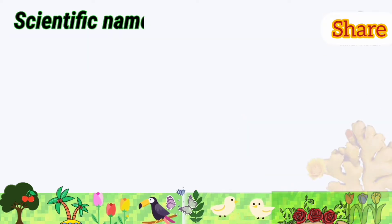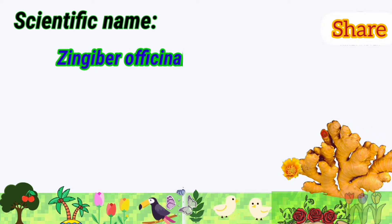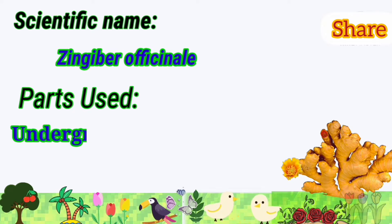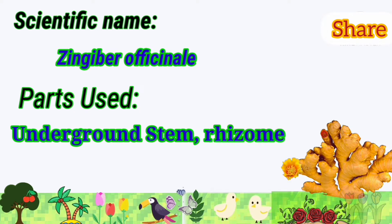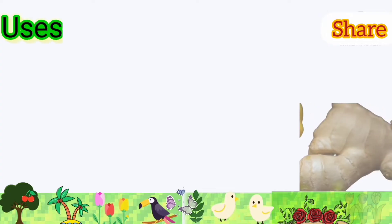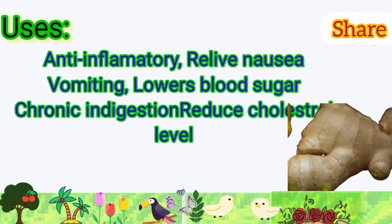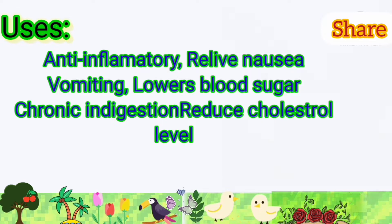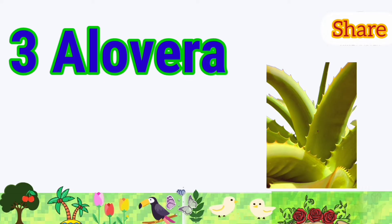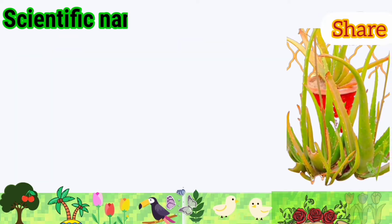Ginger: its scientific name is Zingiber officinale. Parts used are the underground stem (rhizome). It is used as an anti-inflammatory, to relieve nausea, warming, lower blood sugar, chronic indigestion, and reduced cholesterol.